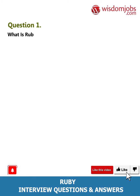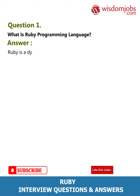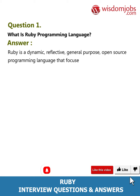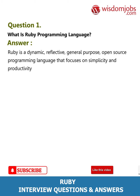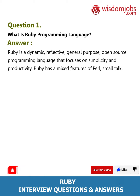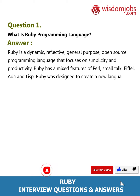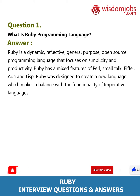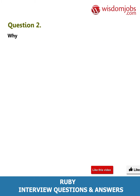Question 1: What is Ruby programming language? Answer: Ruby is a dynamic, reflective, general-purpose, open-source programming language that focuses on simplicity and productivity. Ruby has mixed features of Perl, Smalltalk, Eiffel, Ada, and Lisp. Ruby was designed to create a new language which makes a balance with the functionality of imperative languages.